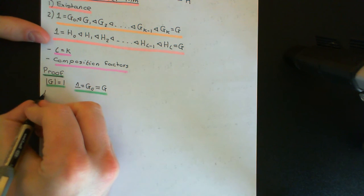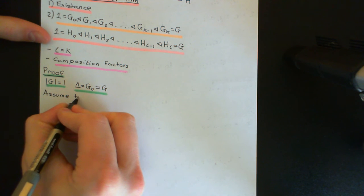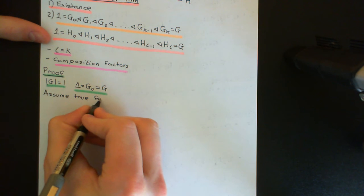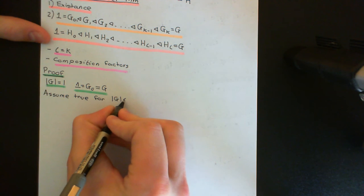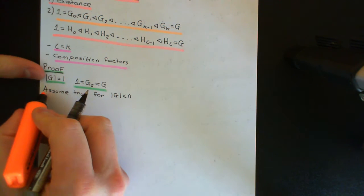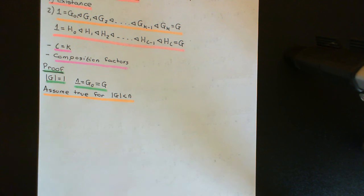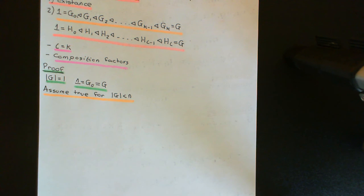Now we state the inductive assumption: we assume that part two of the Jordan-Hölder theorem is true for groups of order strictly less than some n, where n is just some natural number. So if you've got a group of order less than n, you can instantly conclude that any two composition series for that group will have the same length and that their composition factors will correspond.